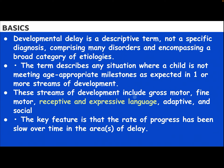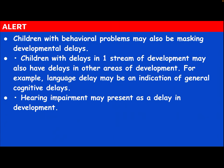These streams of development include gross motor, fine motor, receptive and expressive language — which will be discussed in another lecture — adaptive and social. The key feature is that the rate of progress has been slow over time in areas of delay. Children with behavioral problems may also be masking developmental delay. Children with a delay in one stream may also have delay in another area; for example, language delay may indicate general cognitive delay. Hearing impairment may also present as a delay in development.